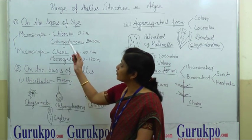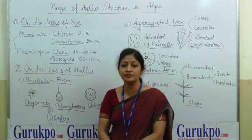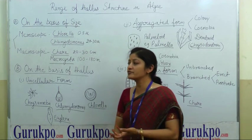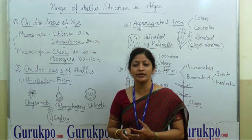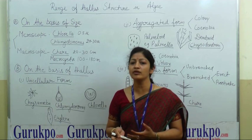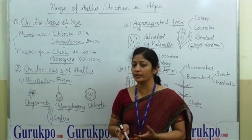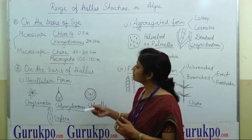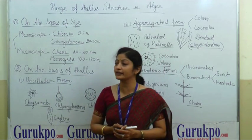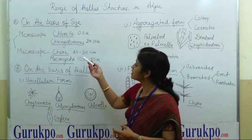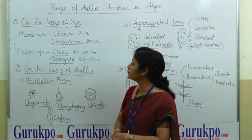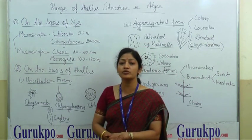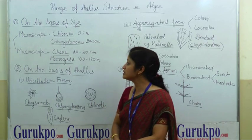Firstly, we will discuss on the basis of size. If we discuss on the basis of size, algae may be of two types: microscopic or macroscopic — meaning it may be smaller or larger in size. Examples of microscopic algae are Chlorella, which is 0.5 mu in size, and Chlamydomonas, which is about 20 to 30 mu in size.